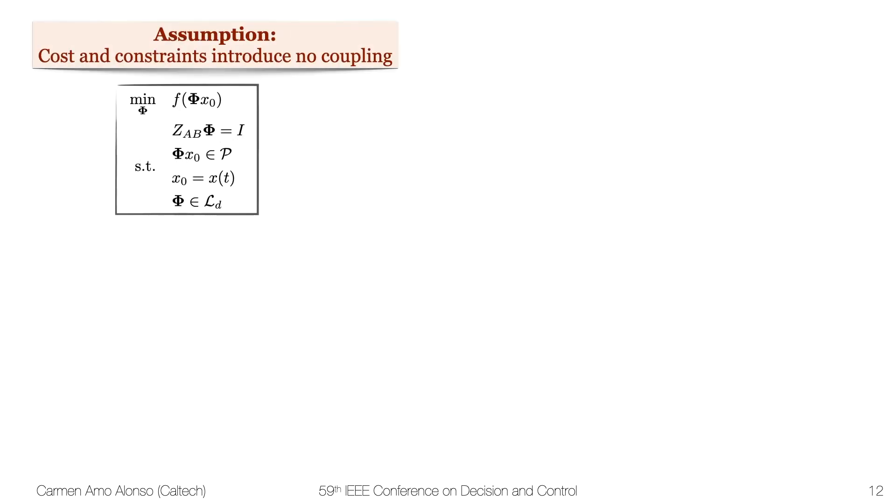I can now introduce the assumption that cost and constraints introduce no coupling. That means if I'm the green subsystem, my cost and my constraints can only depend on my state and my input, but no one else's, given this decomposable structure of the constraints and the objective function. This implies that these two terms are row-wise separable, given the definition of phi and how matrix multiplication works.